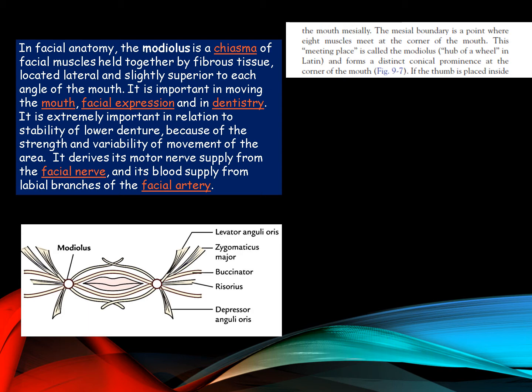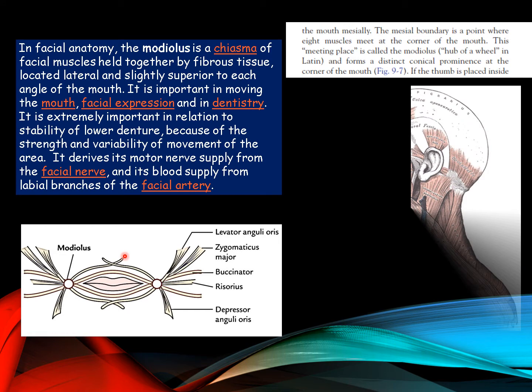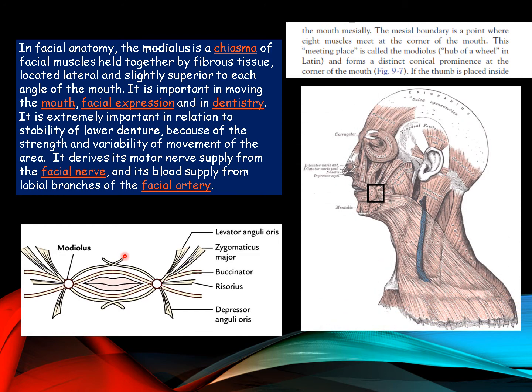Here is the modulus — this is the chiasma created by the facial muscles. It is very important in the field of dentistry in relation to the stability of the lower denture, because of the strength and variability of movement of the area. It derives its motor nerve supply from the facial nerve and its blood supply from the labial branches of the facial artery.